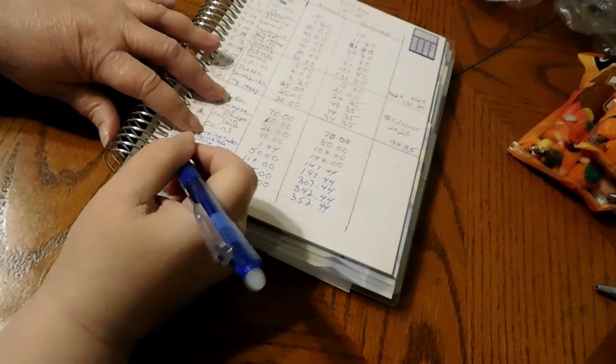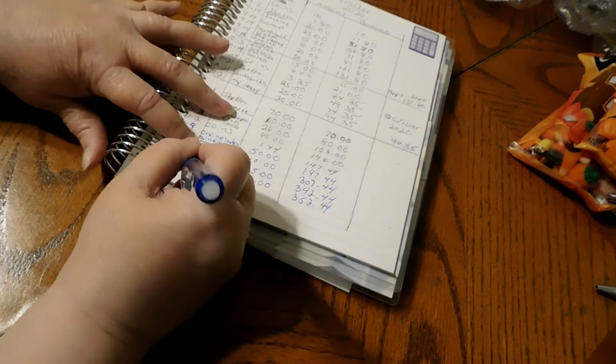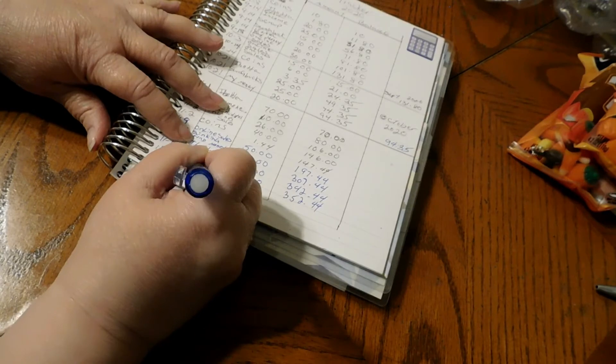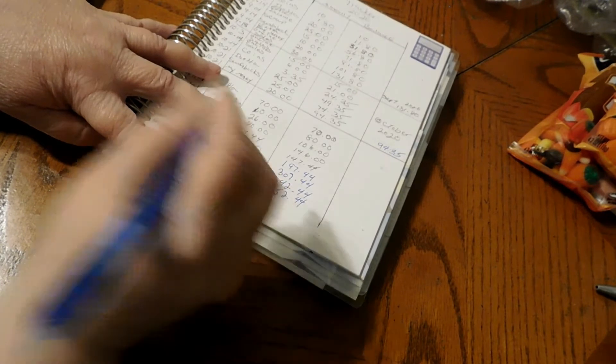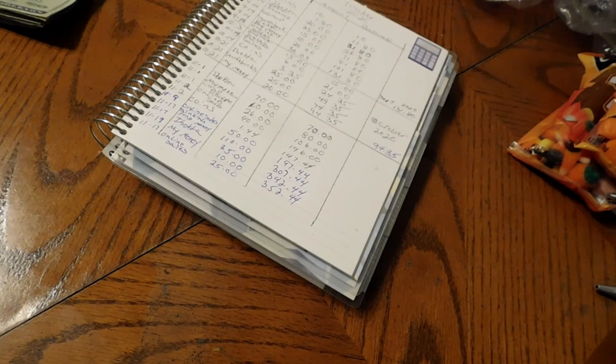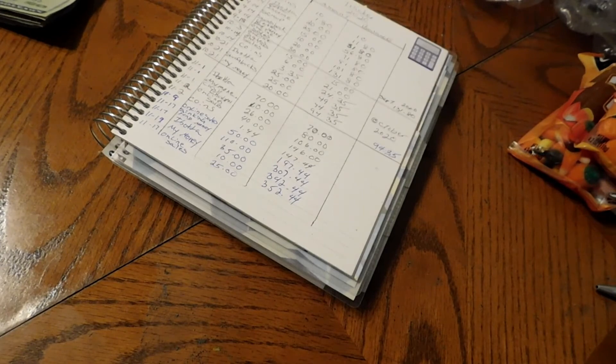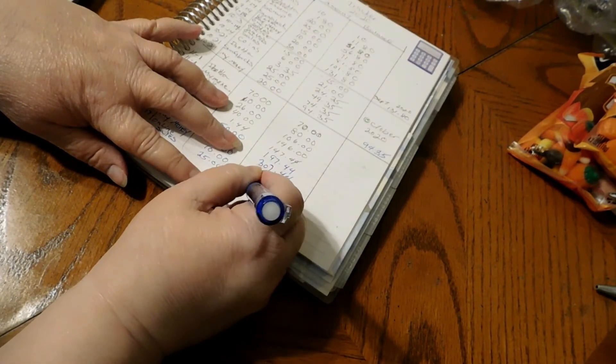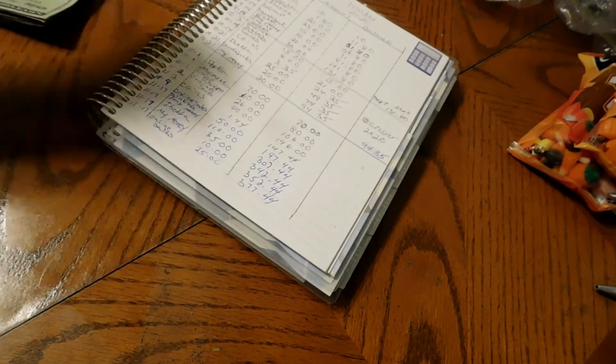And then we had online sales. This was $11, that was $17. I don't know why it was $17. Online sales, and that was $25 for online sales. Let's see, $352.44 plus $25 is $377.44. This is how much we've made so far in the month of November.